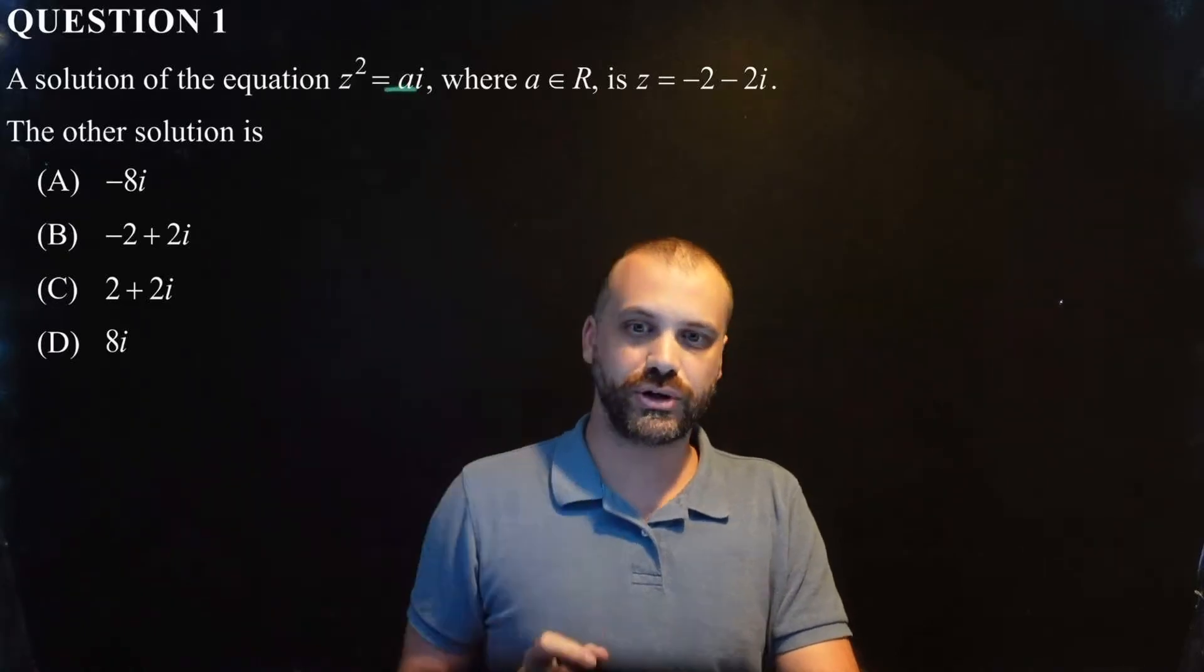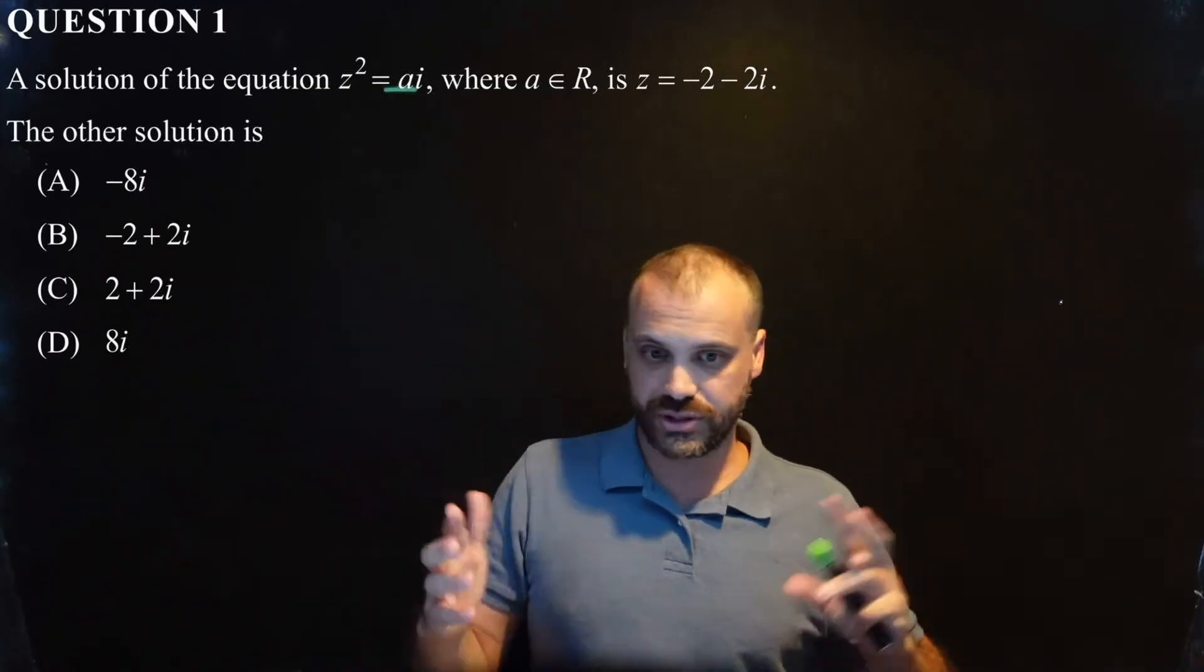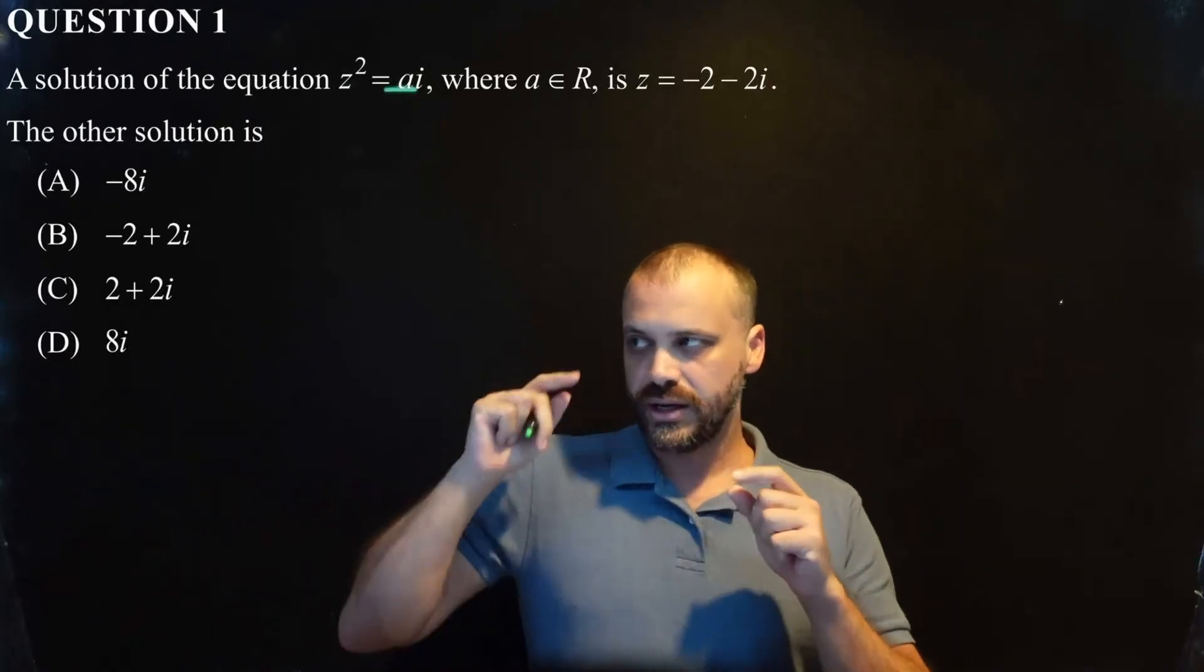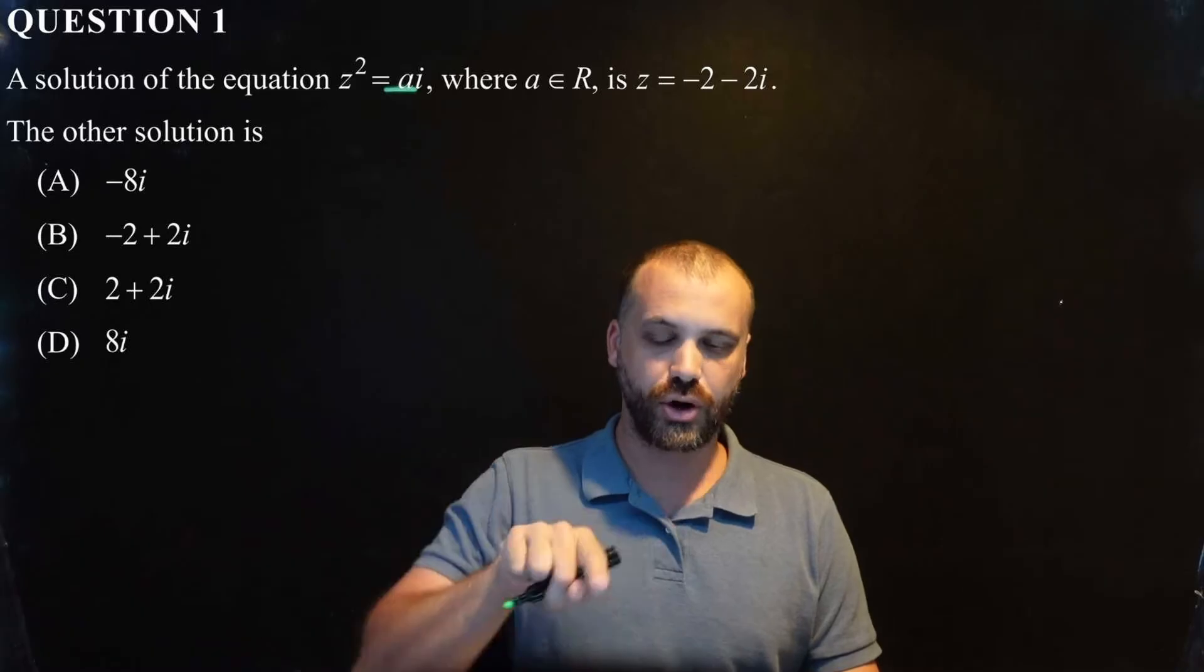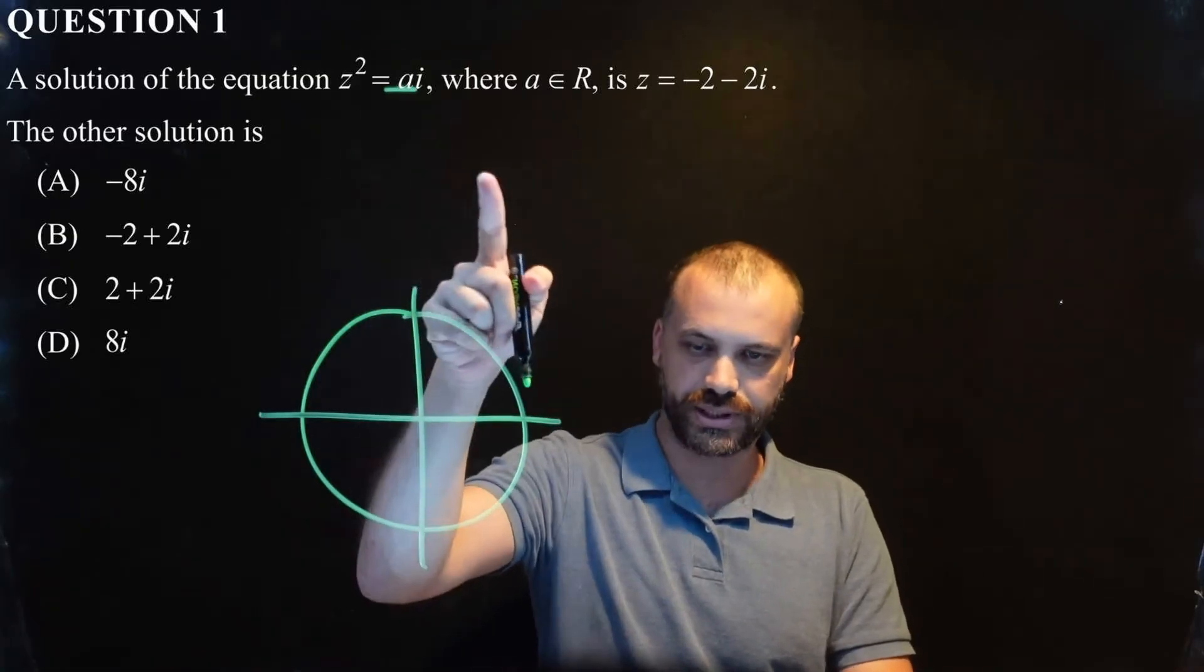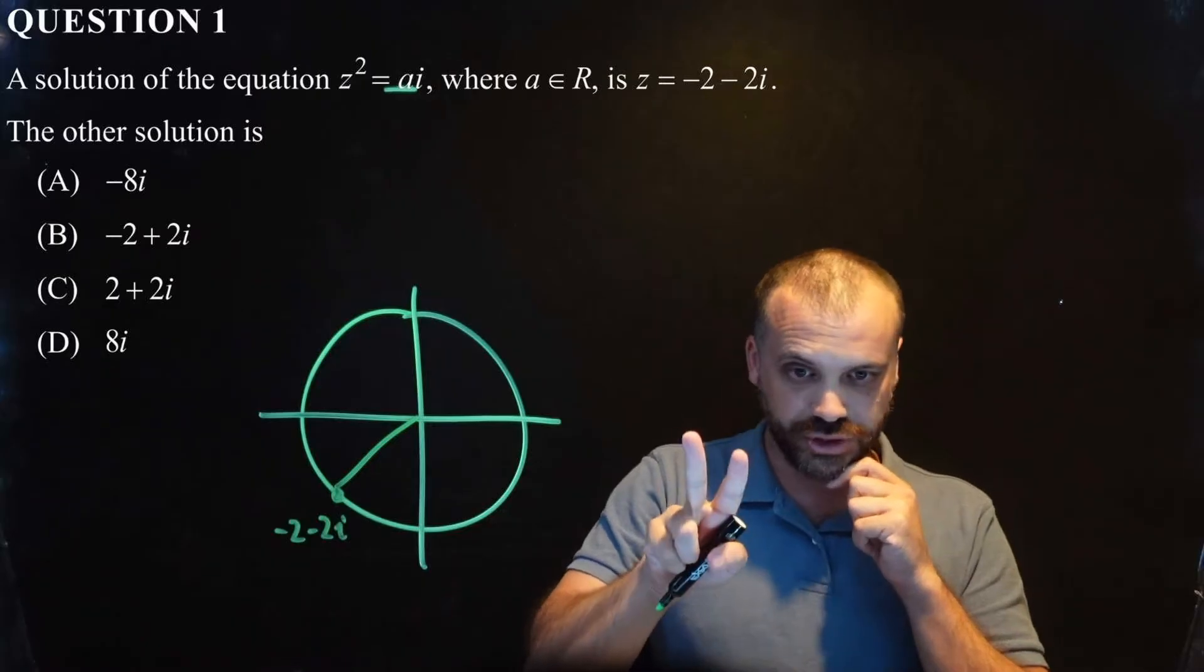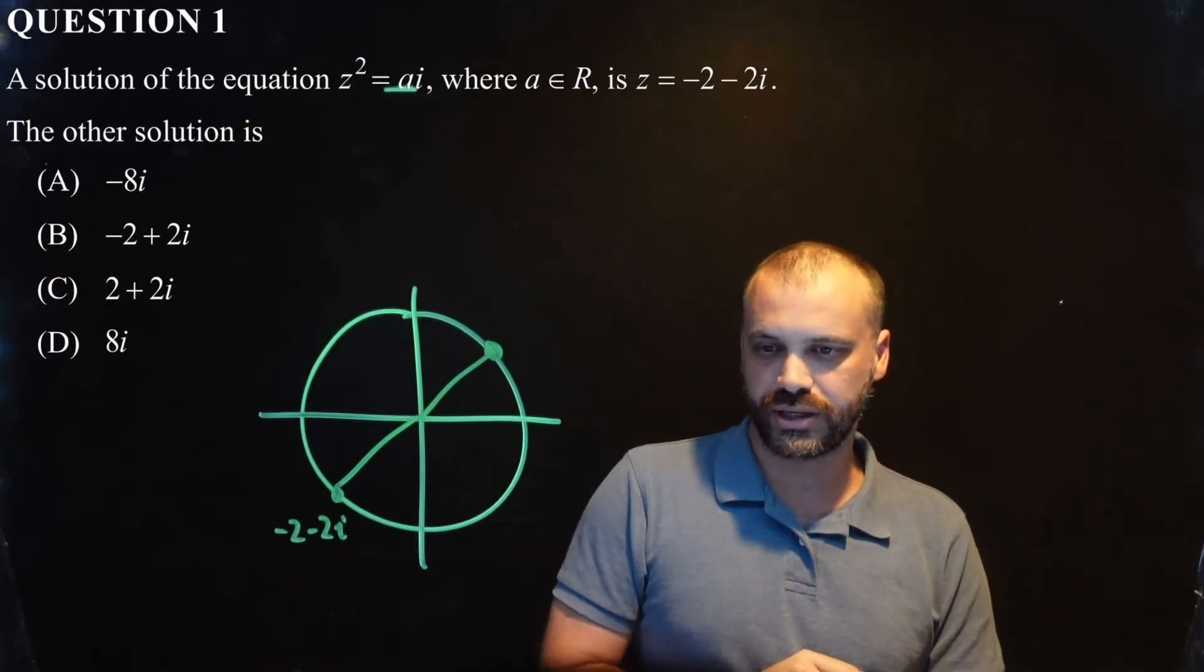So, why is B incorrect? It's because the conjugate root theorem is not in play here, because this value is imaginary. And the conjugate root theorem only works when all of the coefficients and constants are real. That ain't it. So, what we're actually dealing with here is a root of a complex number. So, I'm going to show you two ways to solve this, because there's an easy way and a more difficult way. Alright, so you should know that the roots of a complex number are equally spaced around a circle. The answer is 2 plus 2i, the answer is C.